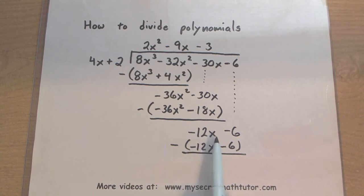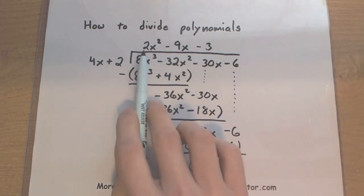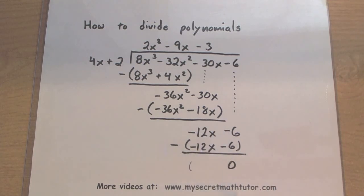So negative 12x minus a minus 12x. Zero. And negative 6 minus a minus. That's the same as negative 6 plus 6. So again zero. And this gives us that there is no remainder. So our final answer is just the 2x squared minus 9x minus 3. If you'd like to see some more videos please visit MySecretMathTutor.com.